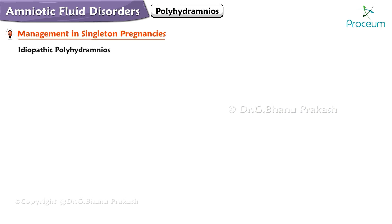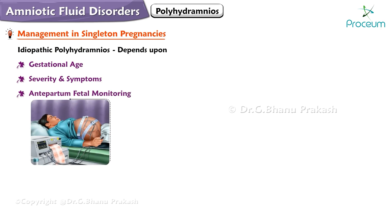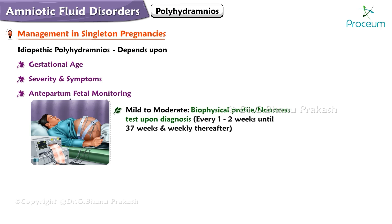For management in idiopathic polyhydramnios, management depends on gestational age, severity, and symptoms. For antepartum fetal monitoring in mild to moderate polyhydramnios, perform a biophysical profile including a non-stress test upon diagnosis, then again every one to two weeks until 37 weeks, and then weekly thereafter.